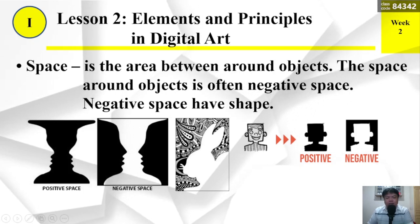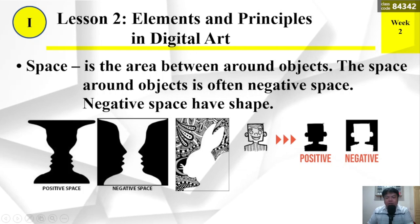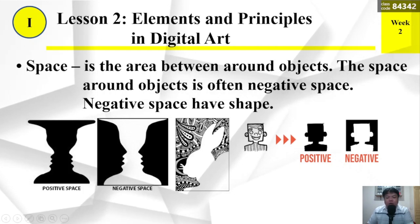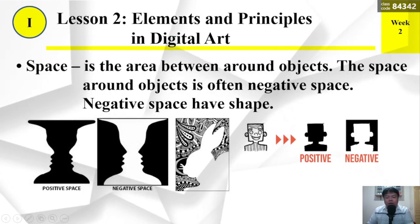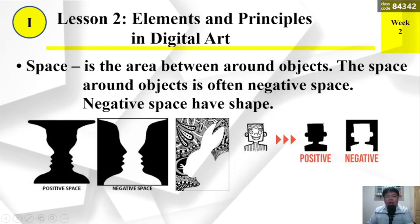Space is the area between and around objects. The space around objects is often called negative space. Negative space has shape.